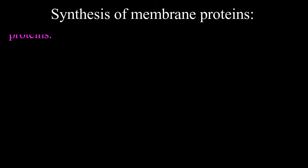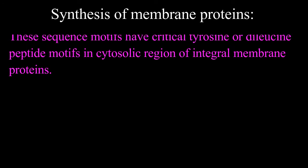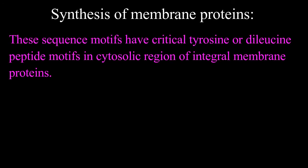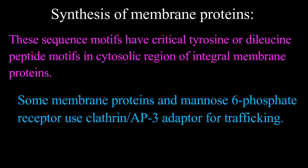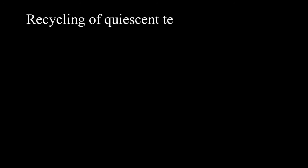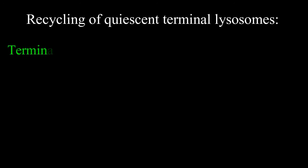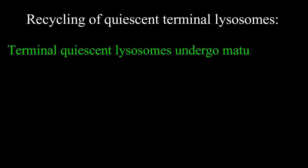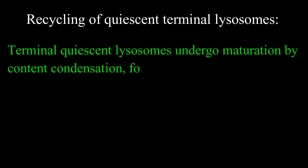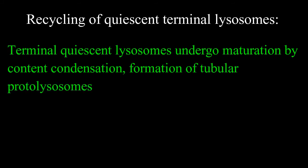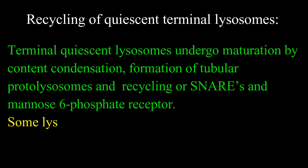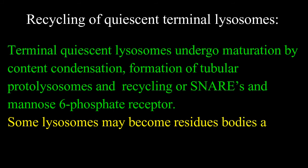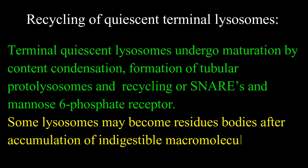These sequence motifs have critical tyrosine or dileucine peptide motifs in the cytosolic region of the integral membrane proteins. Some membrane proteins and mannose-6-phosphate receptors use clathrin-AP3 adapter for trafficking. Third, recycling of quiescent terminal lysosomes. Terminal quiescent lysosomes undergo maturation by content condensation, formation of tubular proteo-lysosomes, and recycling of SNAREs and mannose-6-phosphate receptors. Some lysosomes may become residual bodies after accumulation of indigestible macromolecules.